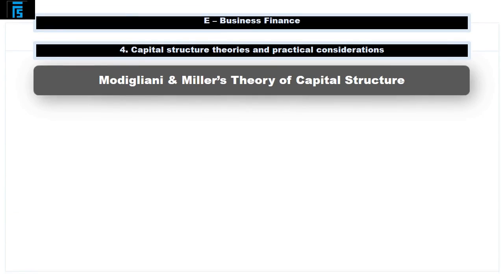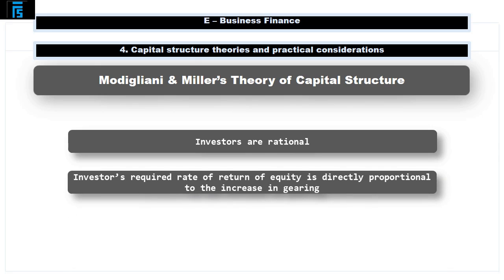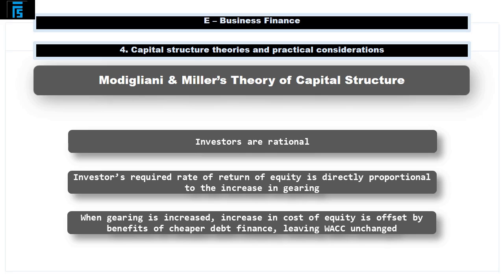Modigliani and Miller's theory of capital structure argues that investors are rational and their required rate of return on equity is directly proportional to the increase in gearing. So there is a linear relationship between the cost of equity and gearing, meaning the increase in the cost of equity offsets the benefits of cheaper debt finance, and the WACC is unchanged.